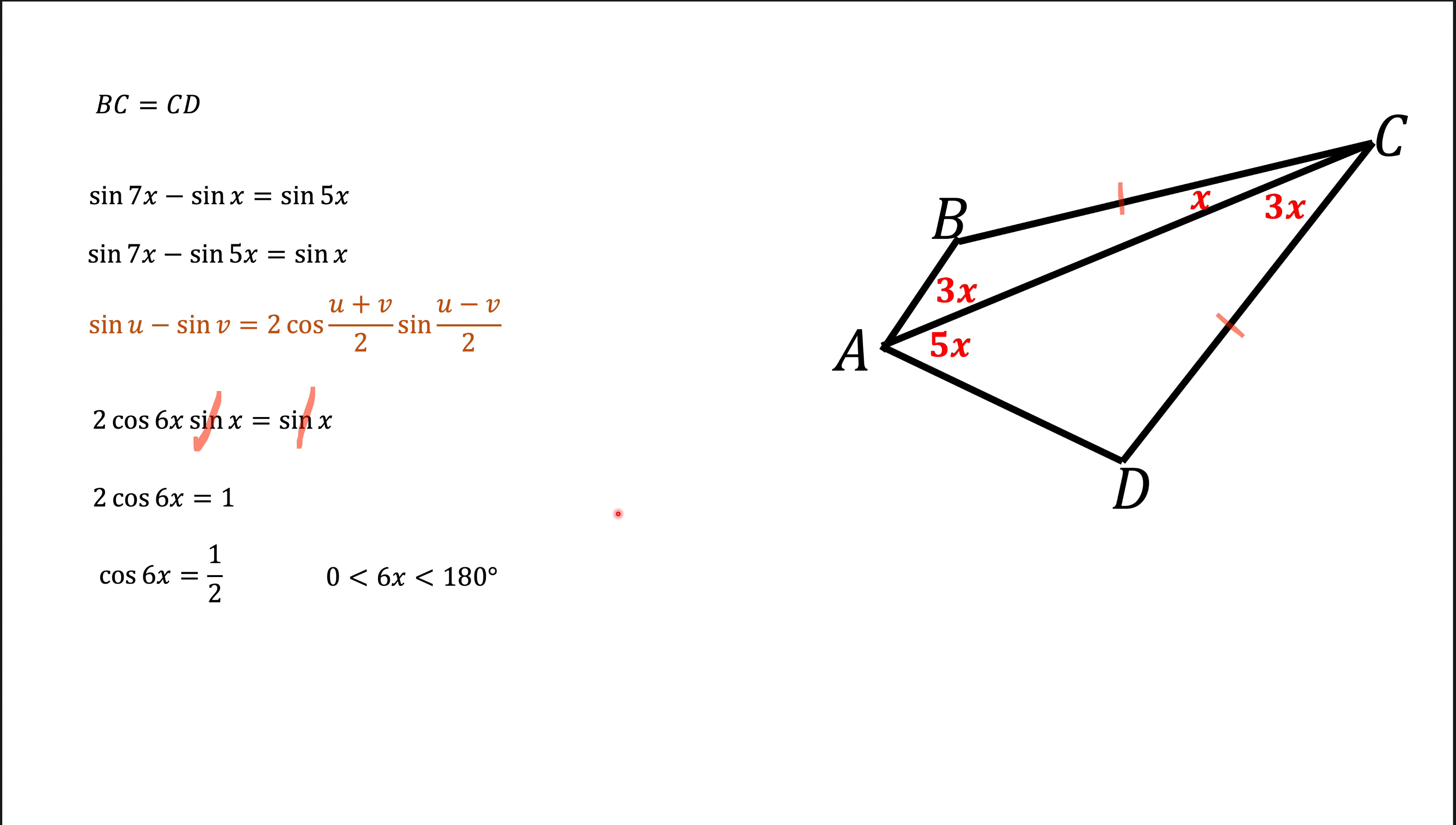If I'm looking at the angle, cosine of which is 1 half, and the angle is between 0 and 180 degrees, there's only one solution. That is 60 degrees. So 6x is 60 degrees, and x will be 10 degrees. The problem is solved.